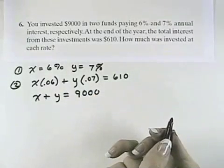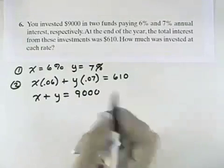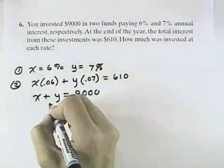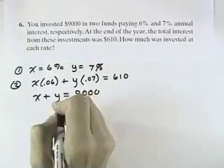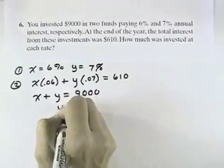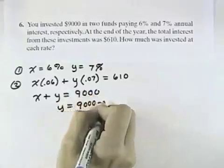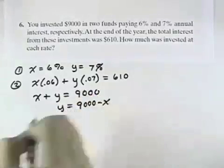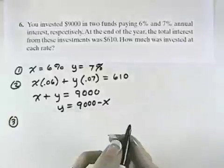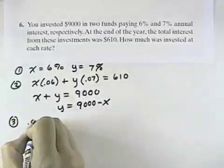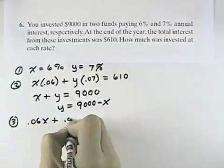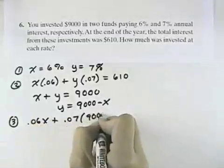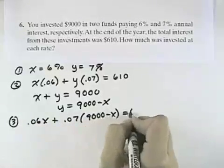So what we can do at this point is solve these equations by taking this second equation and solving for Y. I would have Y equals 9,000 minus X. And I could substitute that in, in step three, to the original equation, so that I have 0.06X plus 0.07 times my 9,000 minus X should equal 610.